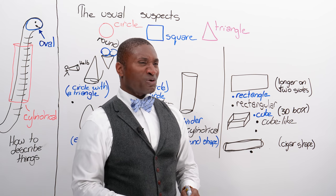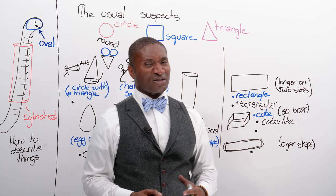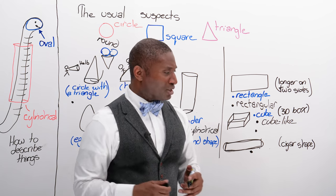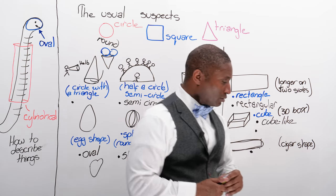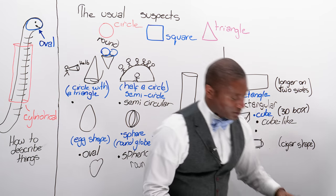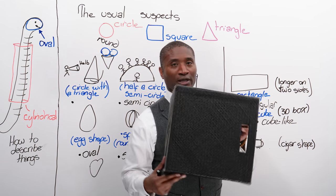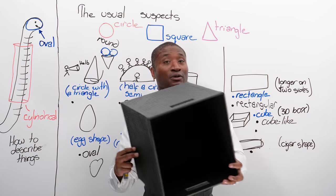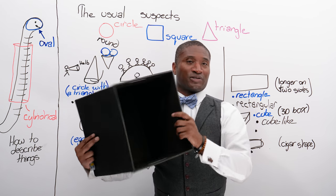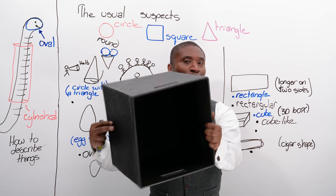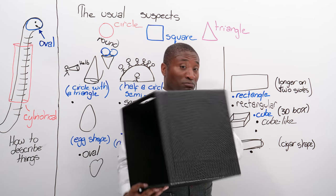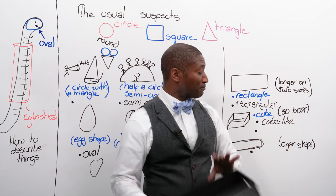Sometimes when we say something is cube-like, it doesn't have a really good — oh, I could do this. This is cube-like — it's missing a side, but it's still cube-like. Cube. Cube-like.